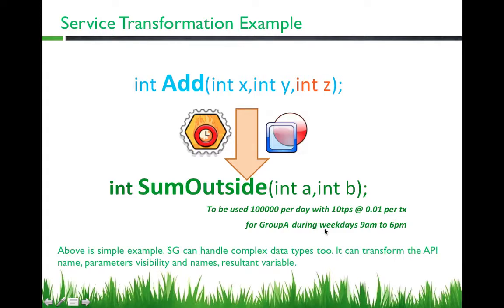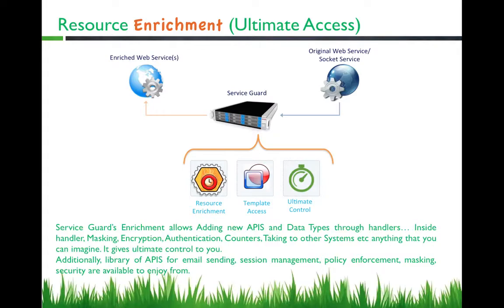In addition, ServiceGuard functions similarly to an application firewall — you can control how much traffic is coming in, what TPS to allow, associate billing, and also associate which group can access it and when, such as weekdays or weekends. On the other side is enrichment, which is complete control where you can add new APIs or add more business logic — masking data, sanity checks, encryption, or hiding certain parameters going out. Legacy systems may not expose the needed business logic, so you can add it in ServiceGuard and expose it to partners.